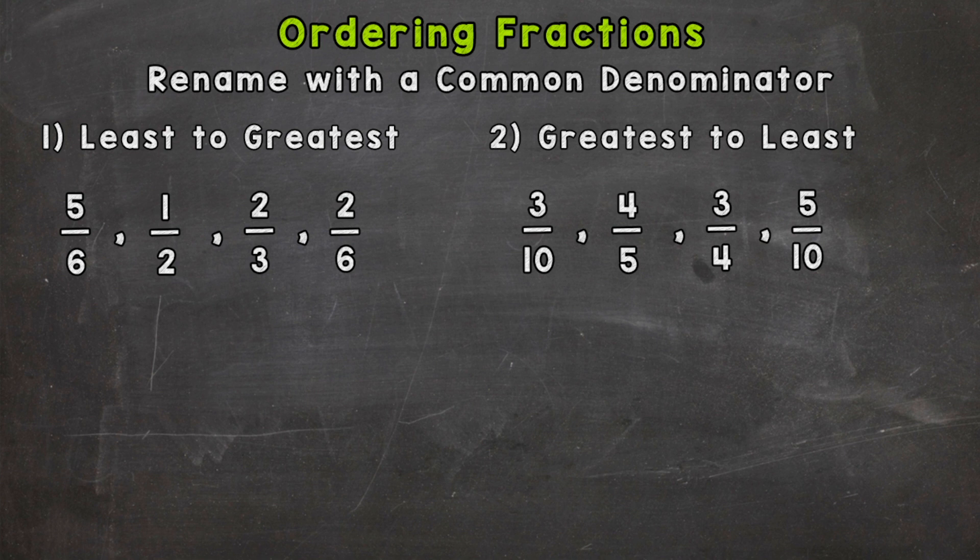That way it's very easy to order them. So if we take a look at the denominators we have a 6, 2, 3, and a 6. So we need to think what's the least common multiple? Where are those four denominators going to hit first as far as their multiples go? And that's going to be our common denominator. And the answer to that is 6. Our common denominator for number 1 is going to be 6. So we need to rename these four fractions with that common denominator.